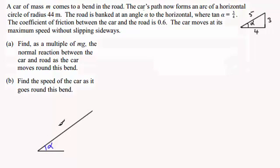Then I'll draw the car on the bend, I'm just going to draw a block here, just to represent that car, something like that. And so it's moving round a bend, where the radius is 44 meters. And because it's moving round a bend, there's going to be an acceleration towards the centre of that circle.